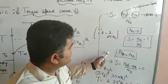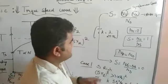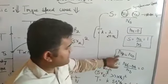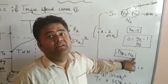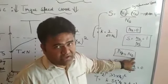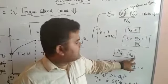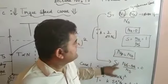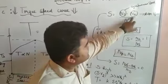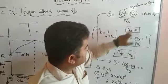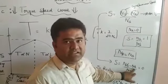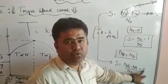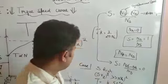Now when the rotor speed equals the synchronous speed, then NR is equal to Ns, and Ns minus Ns is equal to 0, so slip becomes 0.